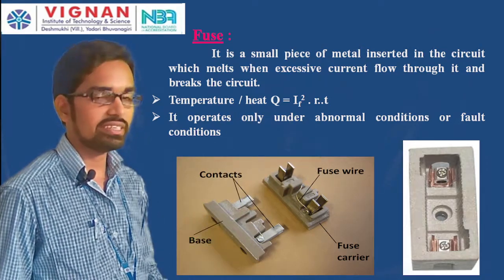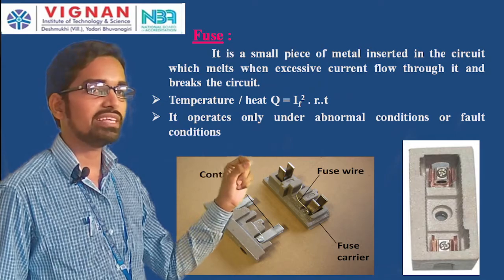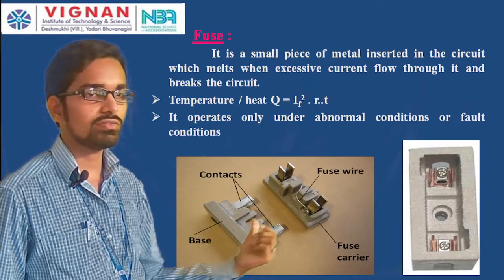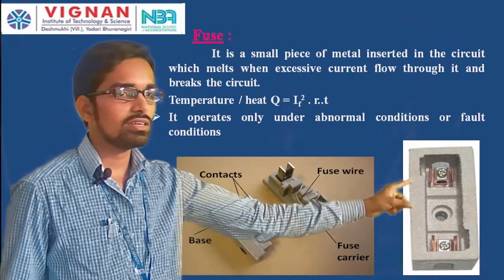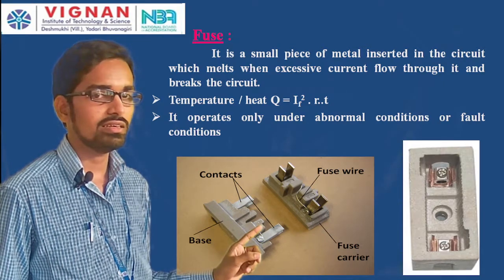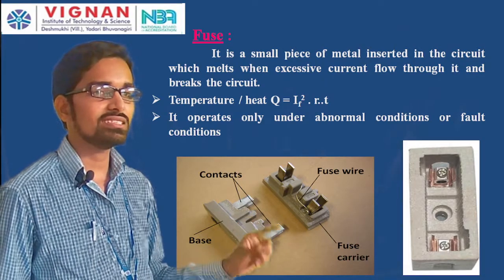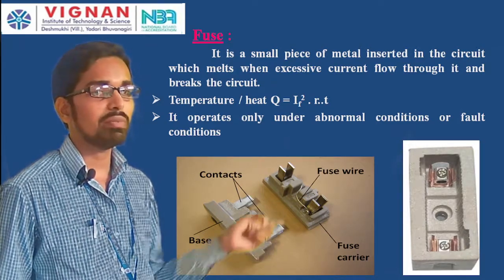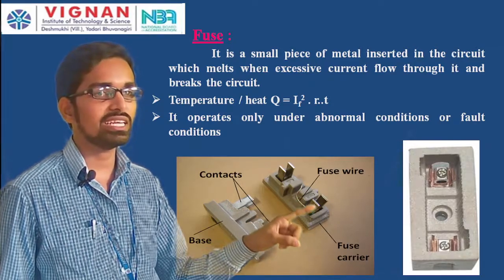The fuse consists of a fuse wire (a single lead wire), a fuse holder with two contacts, and a base. The fuse wire is inserted into the fuse holder. When excessive current flows, the fuse wire melts and breaks the circuit. The fuse does not operate automatically — the blown fuse wire must be manually replaced.